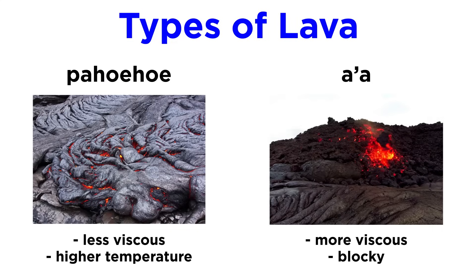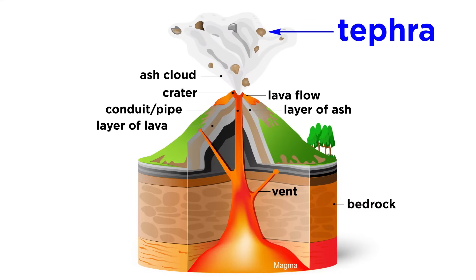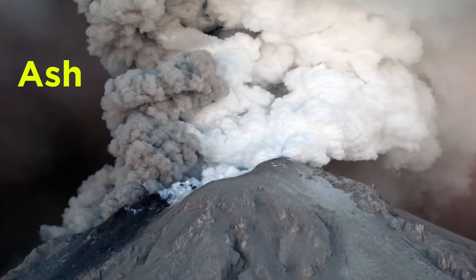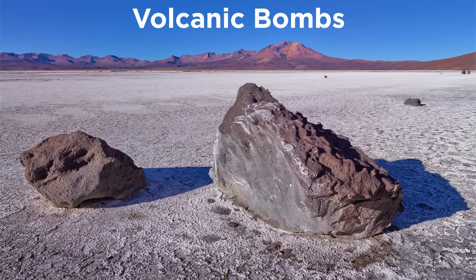There are two main types of lava. Pahoehoe, which is a less viscous, higher temperature lava that erupts from basaltic volcanoes, and Aa, which is a more viscous, blocky lava that sort of avalanches its way down the volcano, collapsing under its own weight. In addition to lava, volcanoes can erupt solid material generally called tephra, which can range from ash to large volcanic bombs — boulder-sized pieces of material that solidify in the air during eruption.